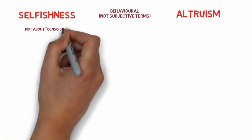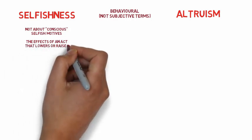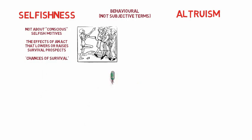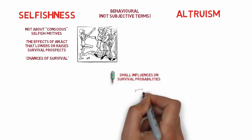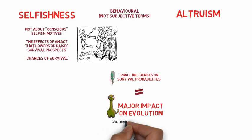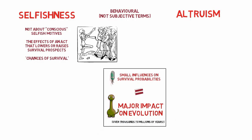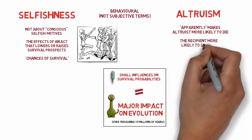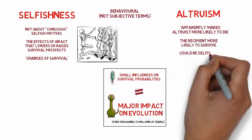In talking about selfishness and altruism, these terms are behavioral, not subjective. This means Dawkins is not concerned about conscious selfish motives. We are just looking at the effects of an act that lowers or raises survival prospects, or welfare defined as chances of survival. Even small and trivial influences on survival probabilities can have a major impact on evolution given the enormous length of time — for example, thousands to millions of years. When we talk of altruism, we are talking about an act that apparently makes the altruist more likely to die and the recipient more likely to survive. However, apparent acts of altruism could really be selfishness in disguise.